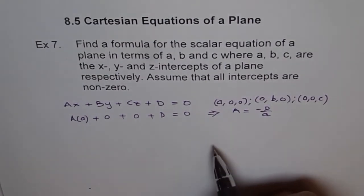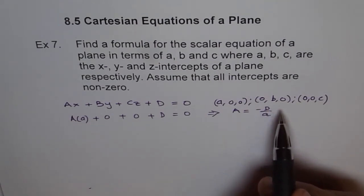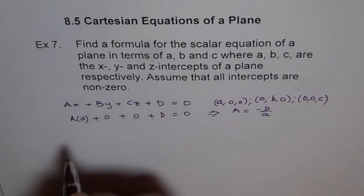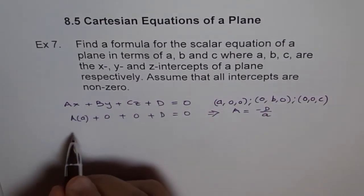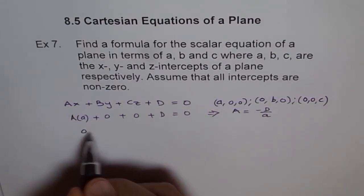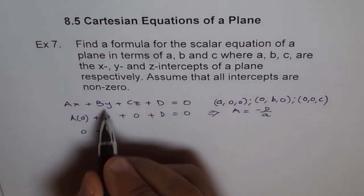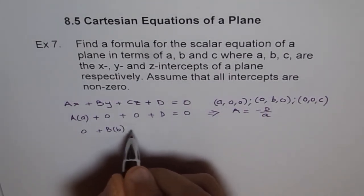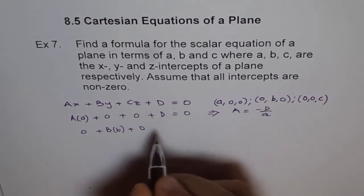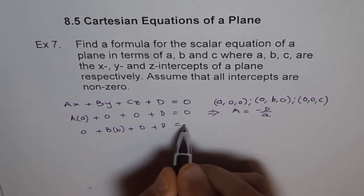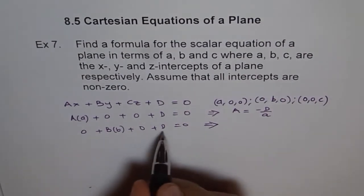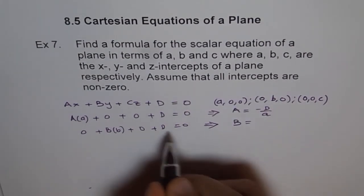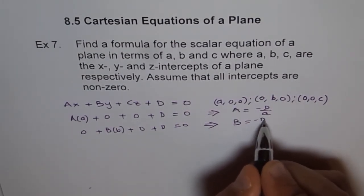Let us do the same thing with the second intercept point, the Y intercept is at B. So let us write this point 0, B, 0 in our equation. So 0 for X will give us 0 here. B for Y will give us capital B times B plus 0 for C plus D equals to 0. That implies that we can write B as minus D over B.